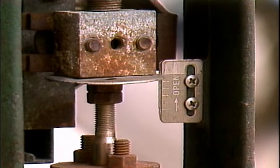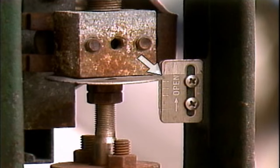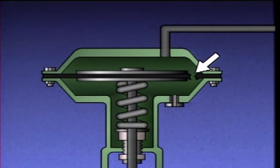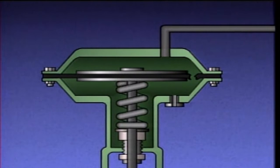However, if the position indicator shows the valve is open when it should be closed, the problem could be in some other part of the control valve or in the actuator. For example, a diaphragm actuator will not be able to properly position its control valve if its diaphragm ruptures or if air pressure to the actuator is lost.